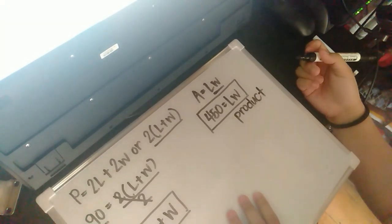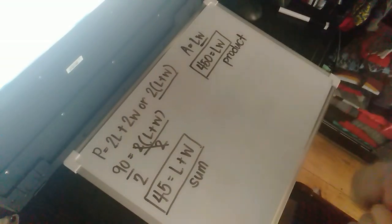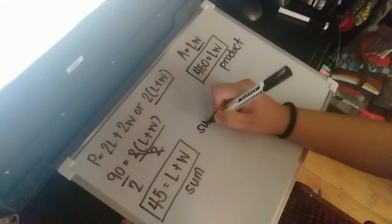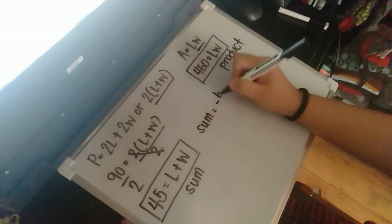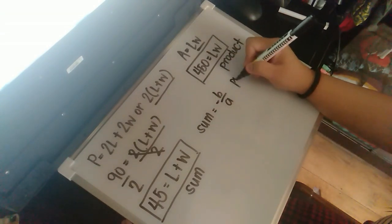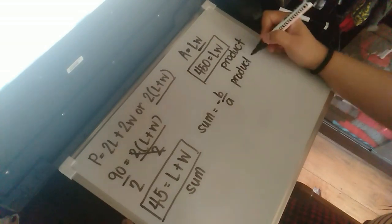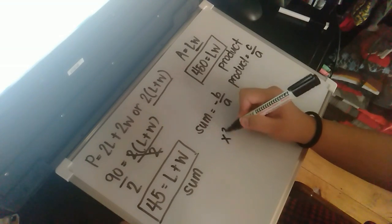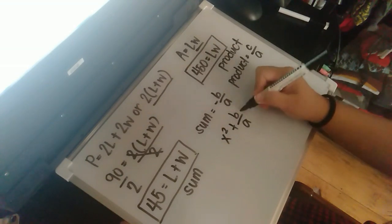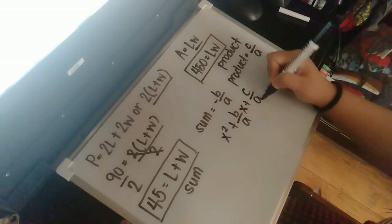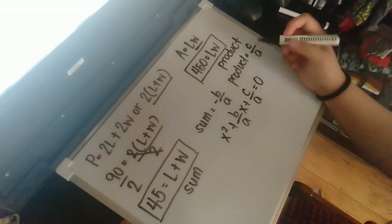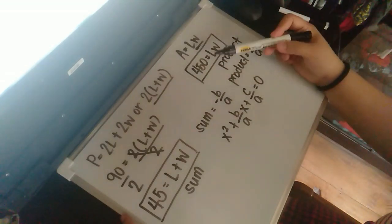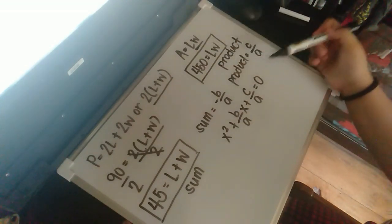We are going to use the sum and product concept. The formula for sum is negative b over a, and for product is c over a. We now use the equation form x squared plus (b/a)x plus (c/a) equals zero, substituting the sum of 45 and the product of 450 into the appropriate positions of the equation.